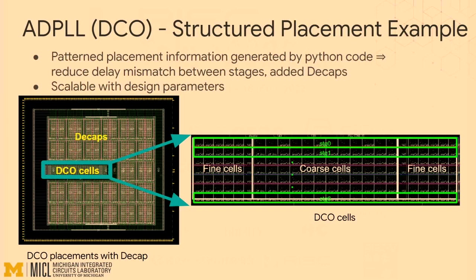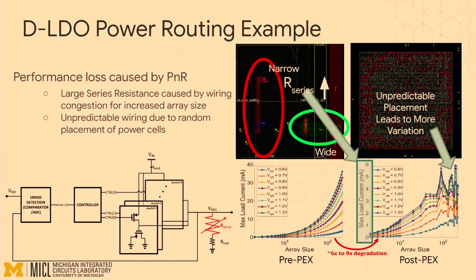Here are a few examples. The DCO has fine and coarse cells — a very sensitive block in the PLL — and we use Python scripts to place them in a structured manner to improve performance. The digital LDO in FASOC 1.0 had random placement, resulting in very low max load current, high variability with the switch array size, and narrow routing with minimal via cuts.